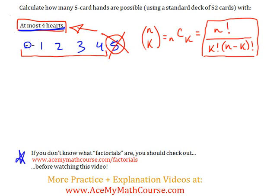So the long way would consist of figuring out all of these, how many hands there are with zero hearts, with one, two, three, and four, adding them all up together. That'll take a little while. You can do it that way.